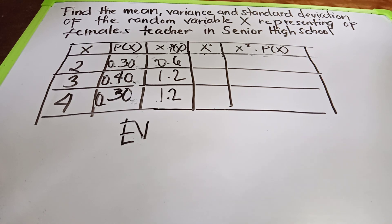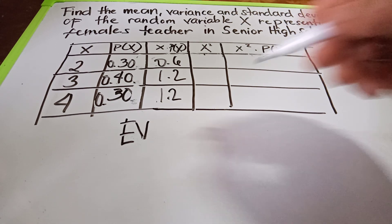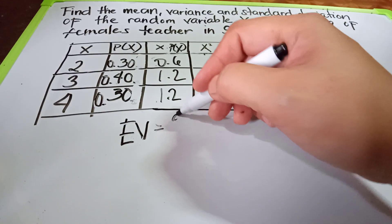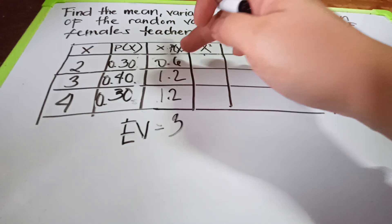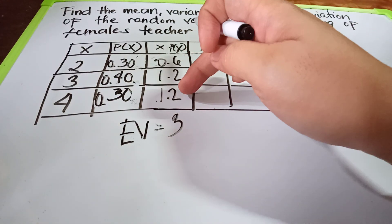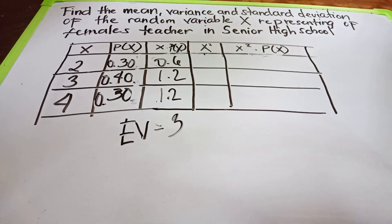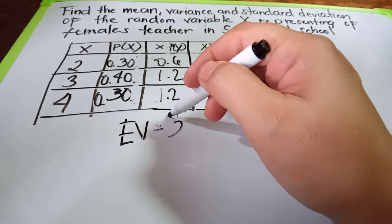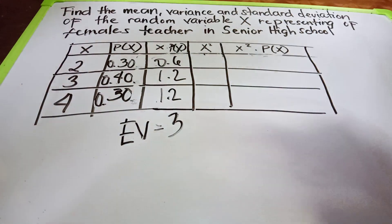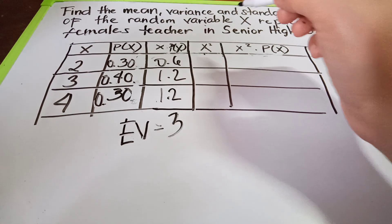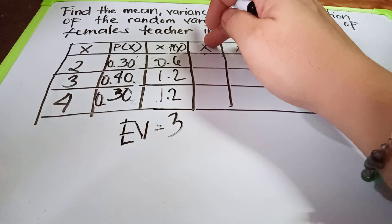Adding these products together: 0.6 plus 1.2 plus 1.2. Be careful — 0.6 plus 1.2 plus 1.2 gives us a total of 3. So the mean, or expected value E(X), is 3.